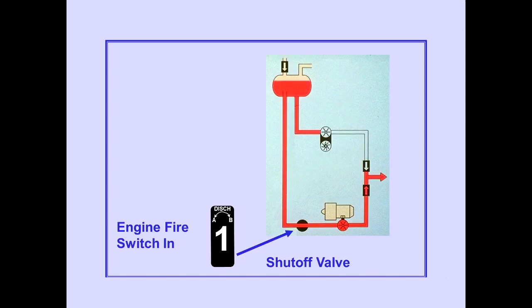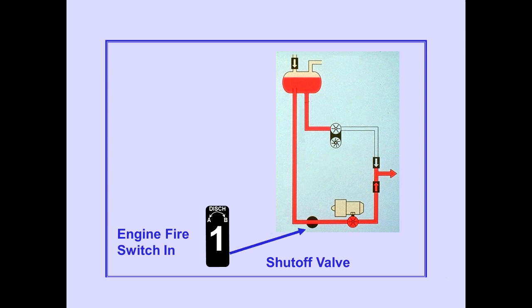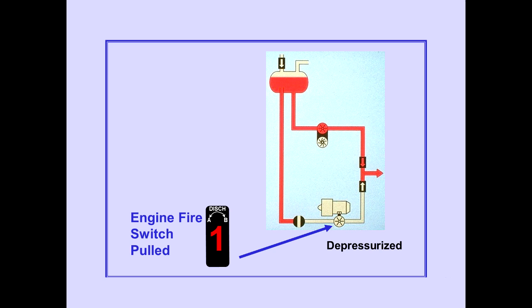The fluid to all engine pumps passes through shutoff valves. The engine fire switch must be in for the shutoff valve to be in the open position. Pulling an engine fire switch closes the shutoff valve to the associated engine pump, preventing the flow of hydraulic fluid to the engine pumps. Pulling the fire switch also depressurizes the engine pump; the pump continues to operate, however it provides no usable pressure.